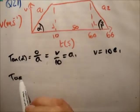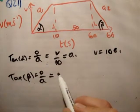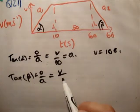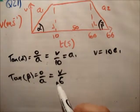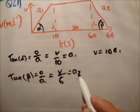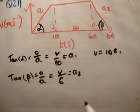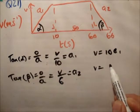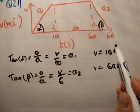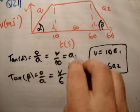And tan beta is equal to the opposite over adjacent is equal to V over 6 in this case. Now, remember, it's just the length, so it's not negative 6, it's just 6. It's equal to A2. So therefore, V is equal to 6A2. Then our first piece of information.